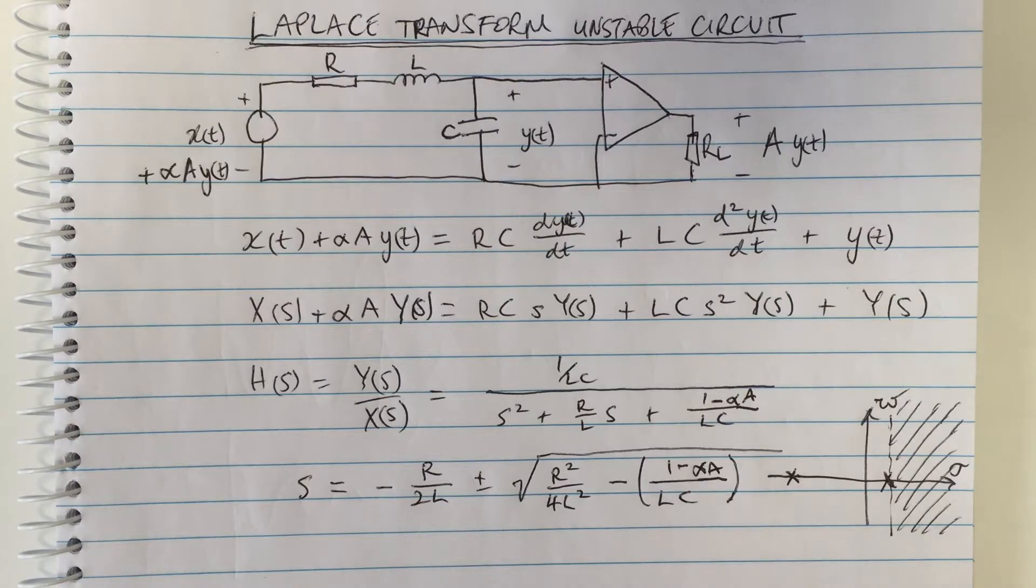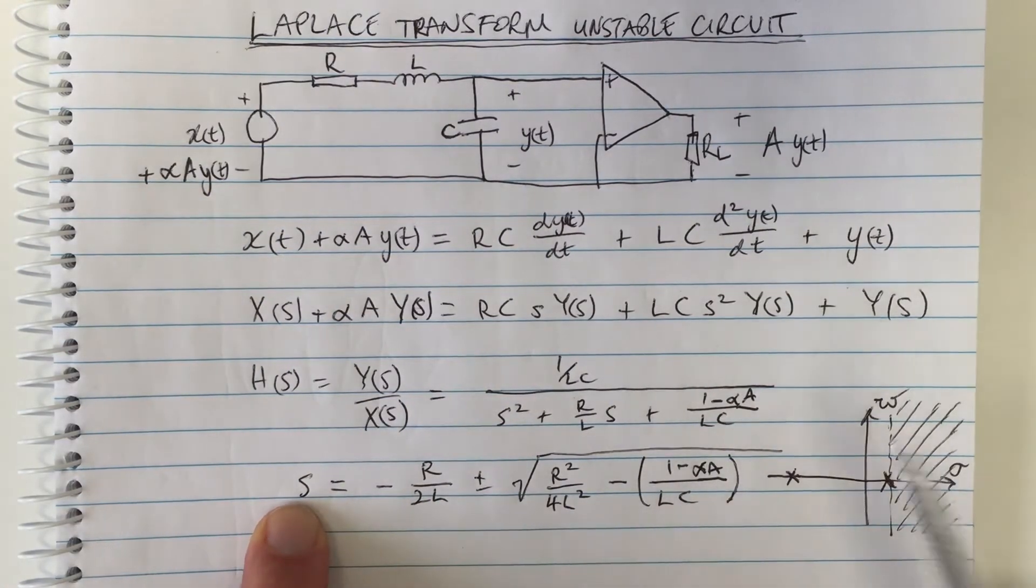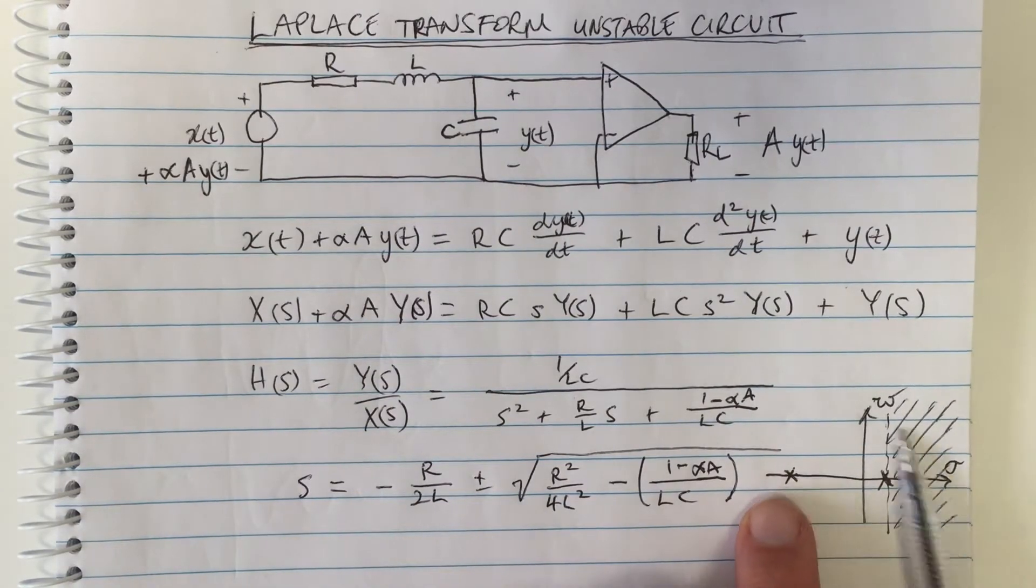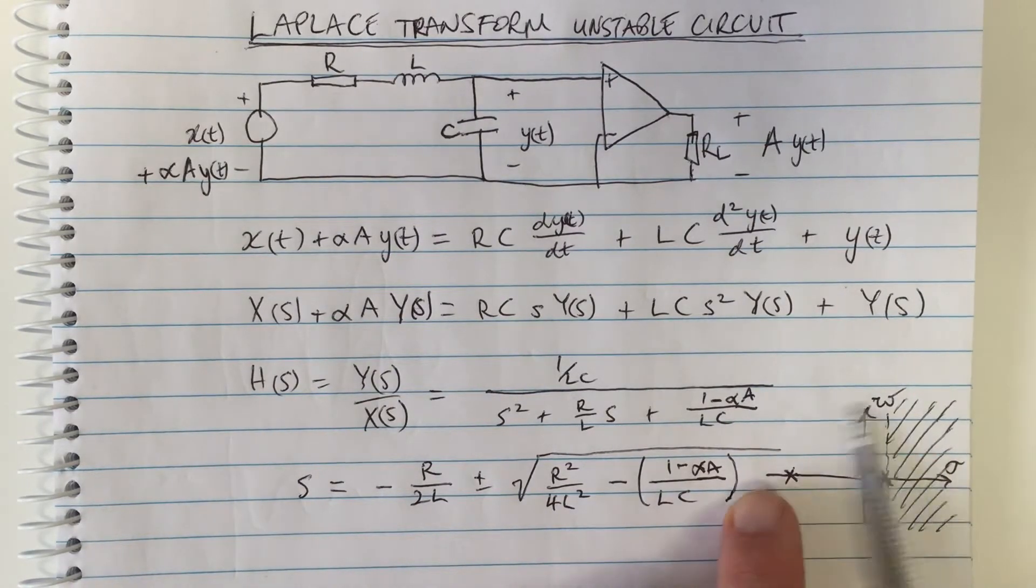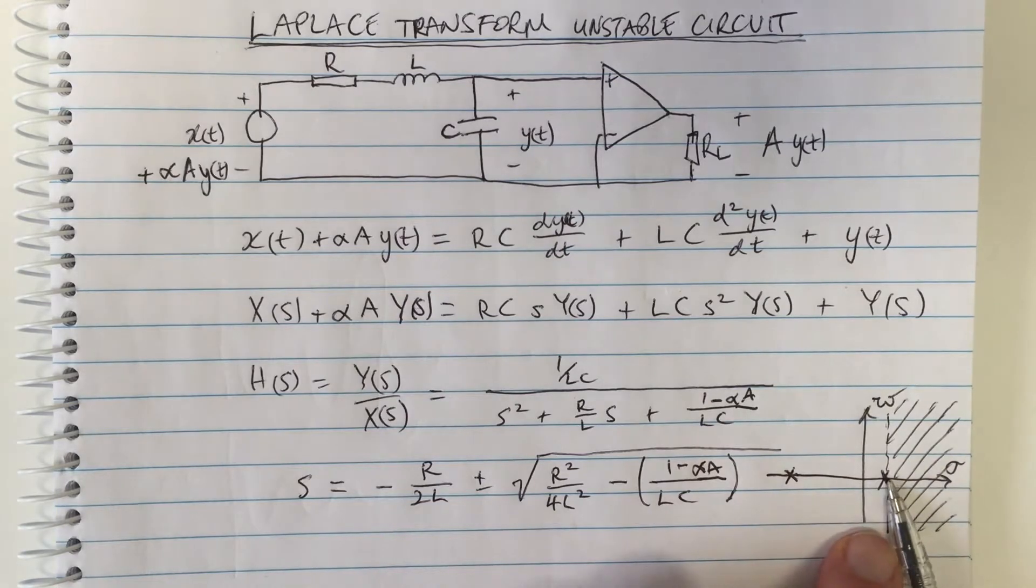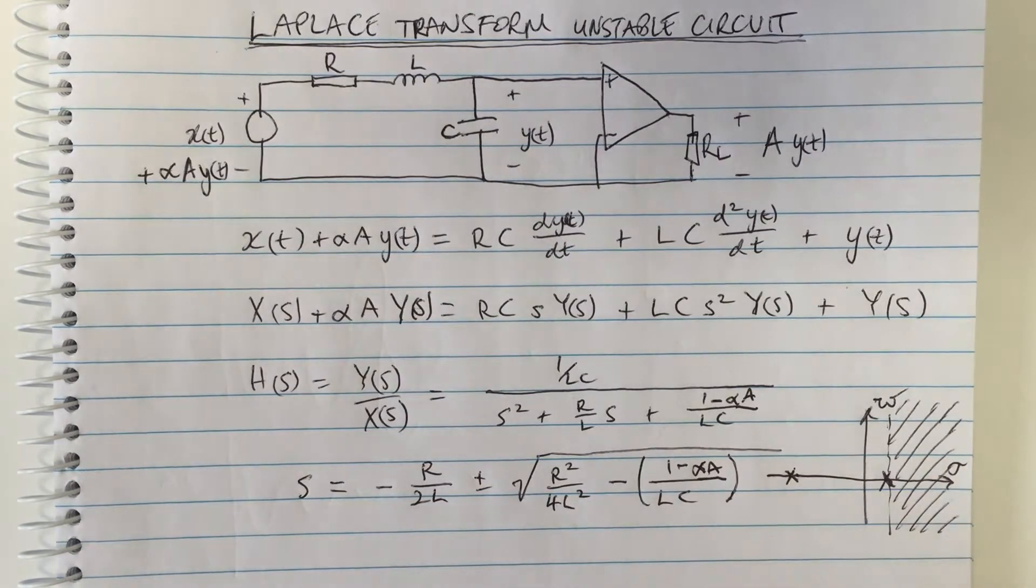This shows how the Laplace transform with the generalization of the Fourier transform means that we can see in the region of convergence space why we can't just use Fourier transforms and we need the generalization of the s parameter.